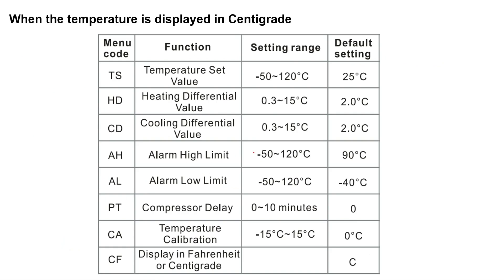Here you can see the setting ranges and default setting values in degrees centigrade for this controller. DS stands for temperature set value, HD is the heating differential value — all these menu codes we will see in detail.